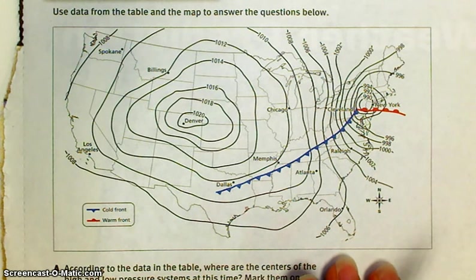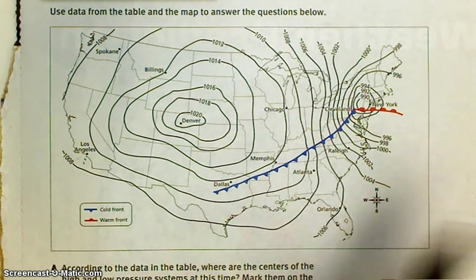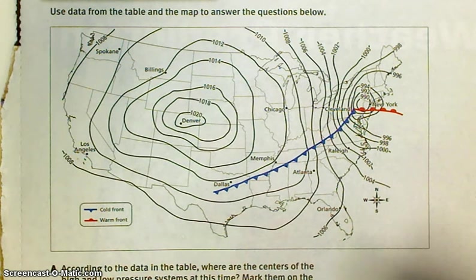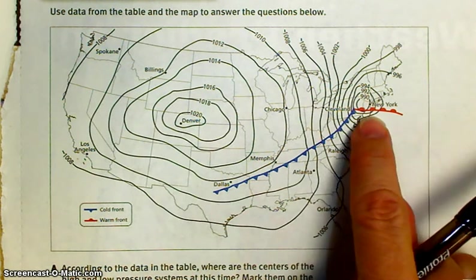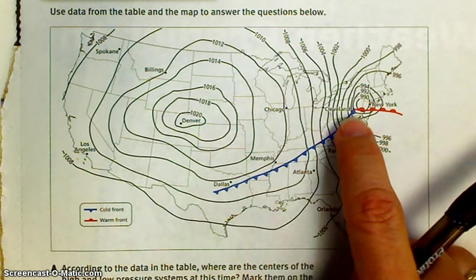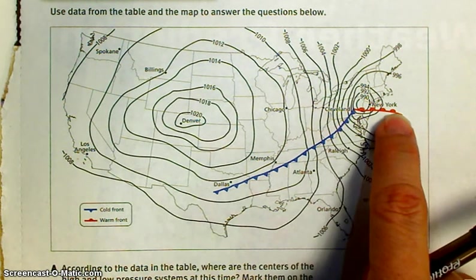All right. So, here's page 467, and it says use data from the table and the map to answer the questions below. So, here's Denver. Here's New York right there. We've got a cold front here. We've got a warm front there.